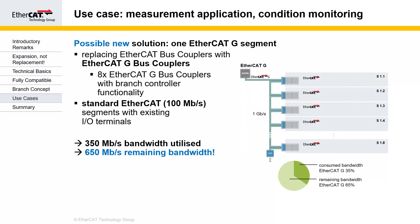If we do the same thing with EtherCAT-G — using an EtherCAT-G backbone with branch controller functionality — we can use the same 100 megabit I/O terminals and the same analog inputs as before, but send the data over the gigabit backbone much faster. Instead of more than 80% bandwidth utilization, we only utilize about a third of the bandwidth, leaving a lot of bandwidth remaining for other data, parameterization, or whatever else we need.